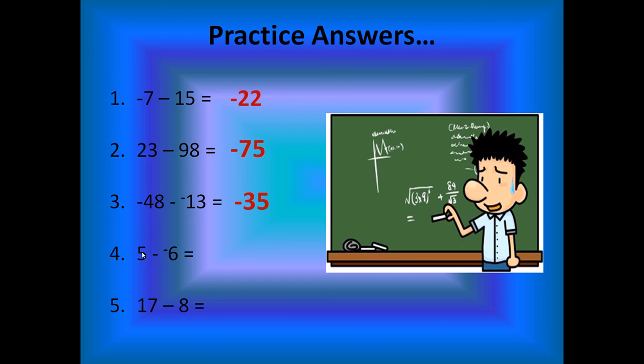Okay. Three for three. Number four. Keep the positive 5. Change subtraction to addition. And the opposite of negative 6 is positive 6. Well, that just means it's 5 plus 6. And 5 plus 6 is just 11.